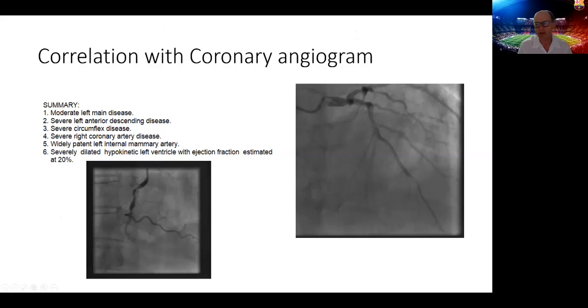This patient went on to have a cardiac catheterization. The cardiac cath showed total occlusion of the RCA in its mid portion with filling via collaterals from the LAD. But he also has severe LAD disease as well as severe circumflex disease. The ejection fraction was coded at 20% on the coronary angiogram.